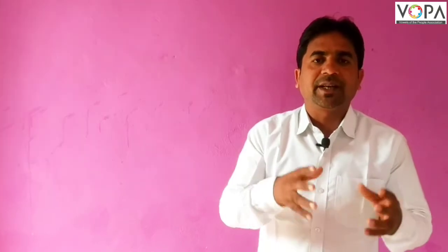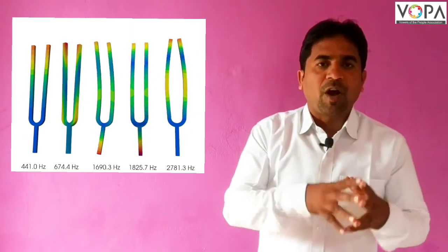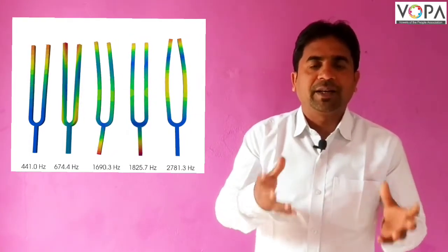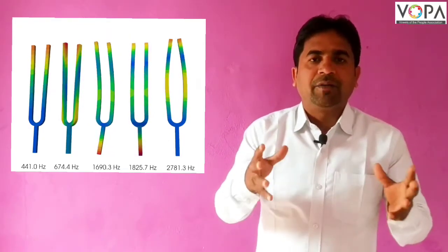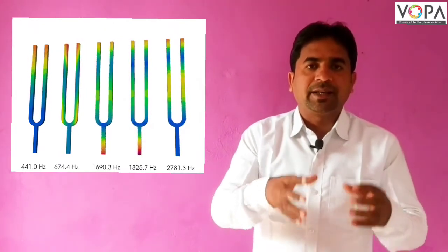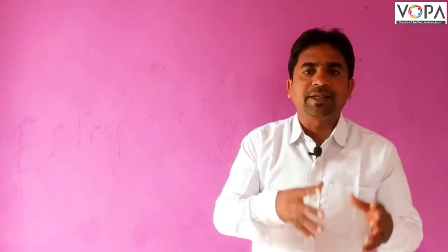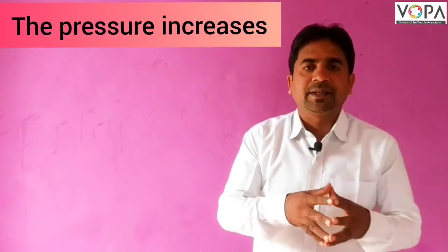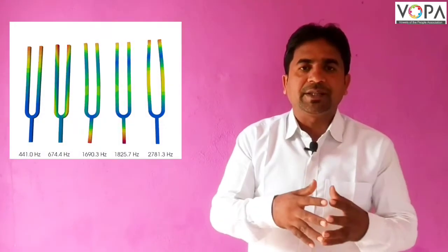This means the tuning fork gets into a periodic motion — the prongs move forward and backward. During this vibration, when the prongs move away from each other, the air molecules inside spread out and the pressure increases. A region in which the pressure increases and the density also increases is called compression.